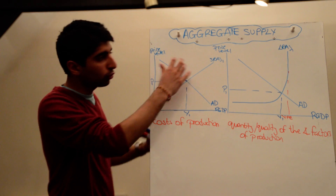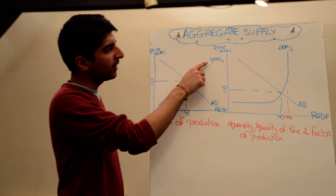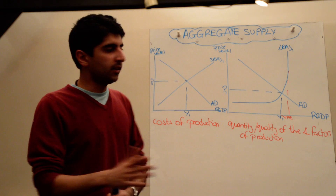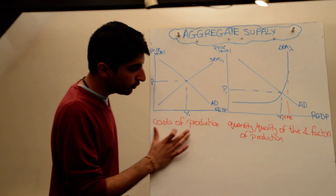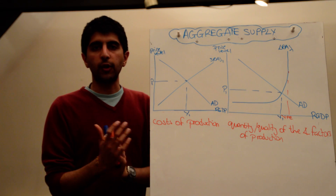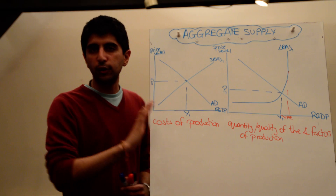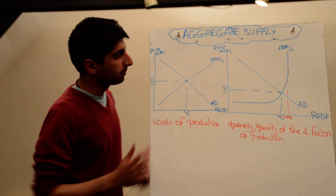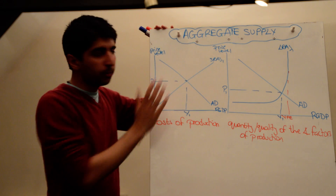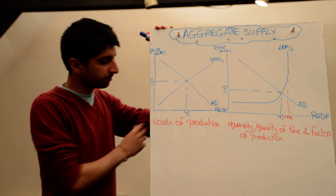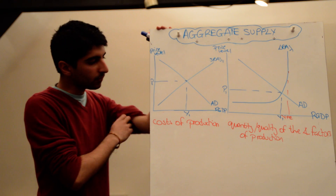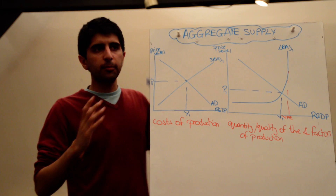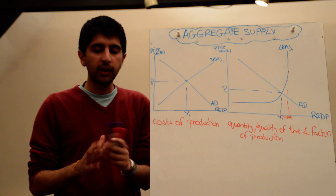Let's look at short-run aggregate supply first. It doesn't matter if you've learnt this is just aggregate supply — as long as you get the theory and the understanding of what's going on, you'll be fine in any exam situation. Short-run aggregate supply is upward sloping, just as we've learnt in micro. But in a macro sense, what might affect the cost of production of firms in the whole economy?